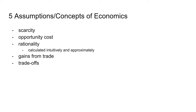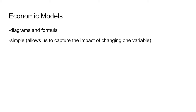Gains from trade explains that when we specialize in what we are best at doing and we trade, we're able to gain more than we can if we just did everything by ourselves. Next, economic models. In economics, we use a lot of diagrams and formulas, and these diagrams and formulas are simplified because they allow us to focus on the effects of changing one variable. This can sometimes be hard to understand why things happen in economic theory, mostly because the simplification makes it harder to grasp.